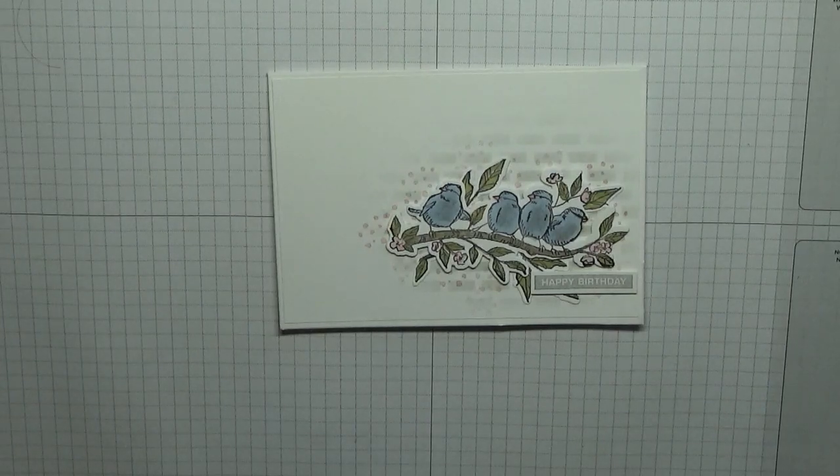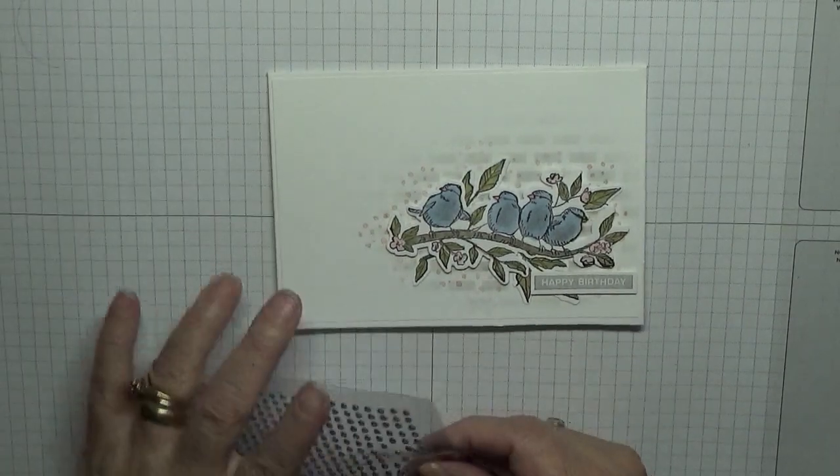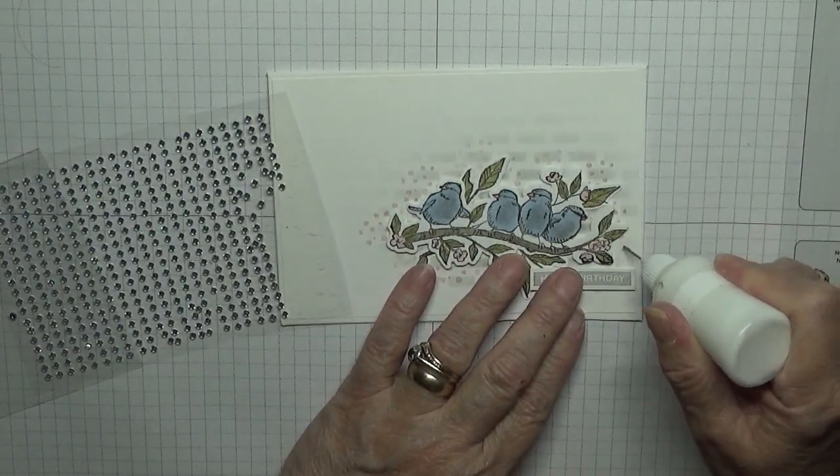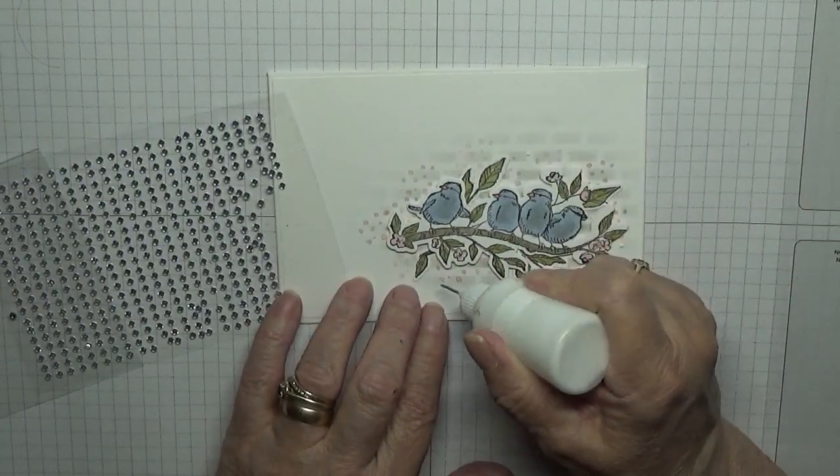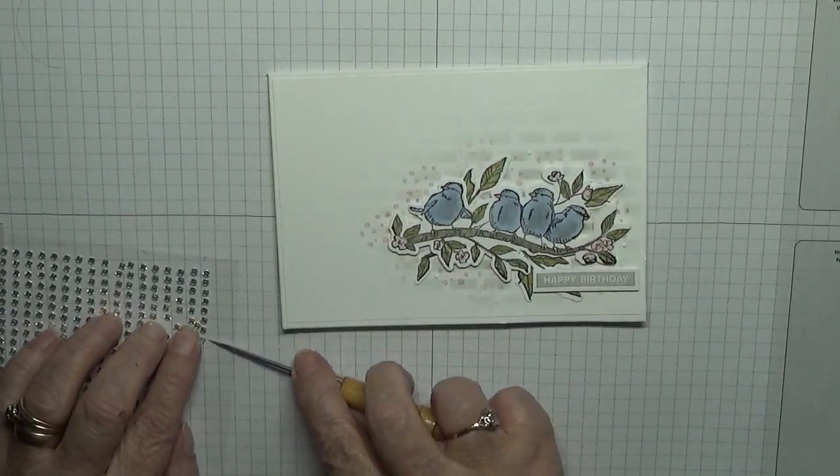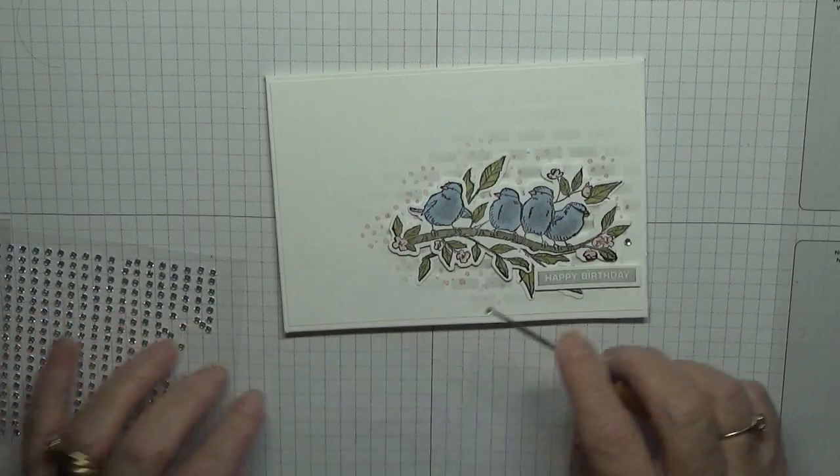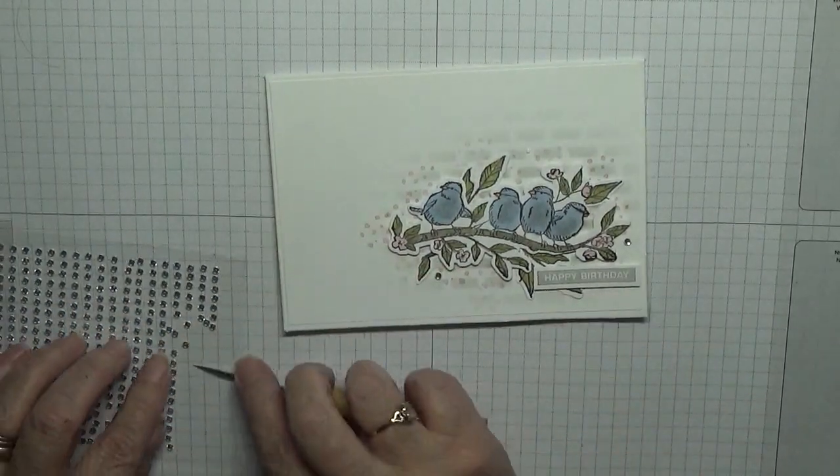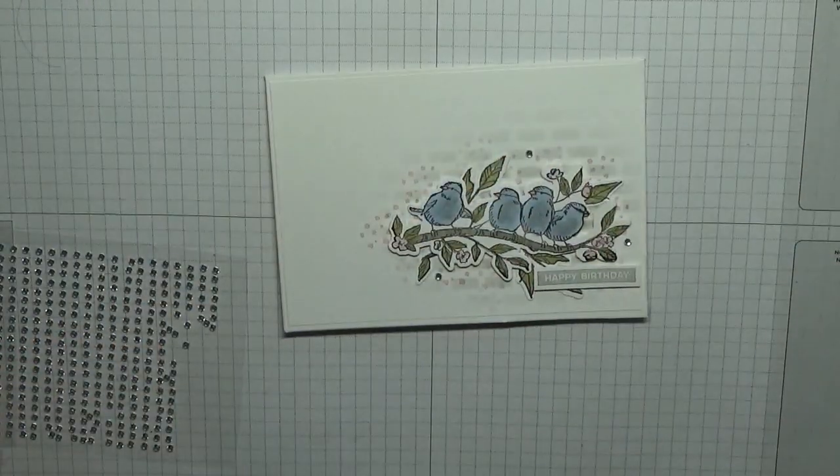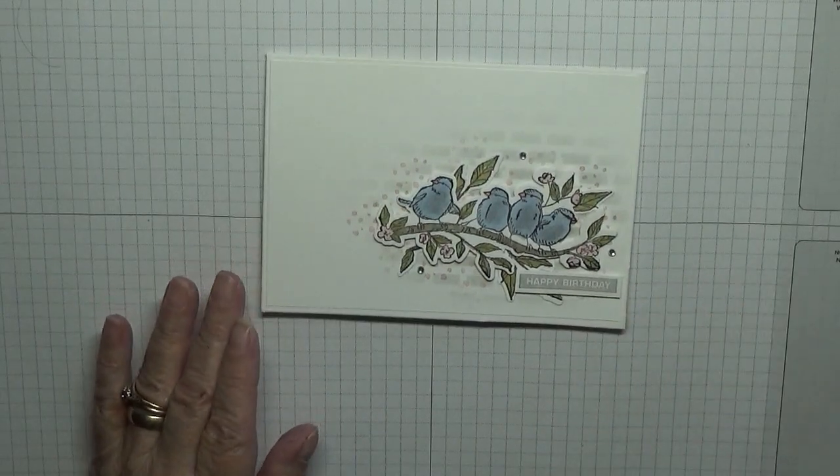Now all we've got left to add is some gems, and I only added three. What I have been doing lately is adding a dot of glue where I'm placing the gems because I'm finding they don't stay on that long. Well they keep getting knocked off, not surprised they get knocked off the way I stack my cards up when I've done them. There they are. So that's that card done, hope you like it.